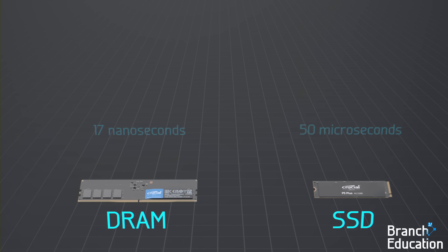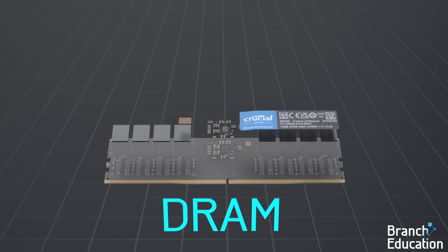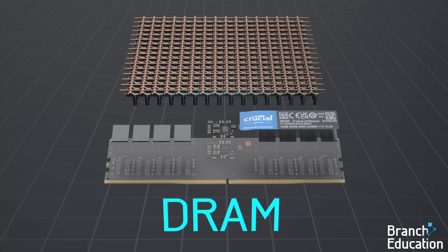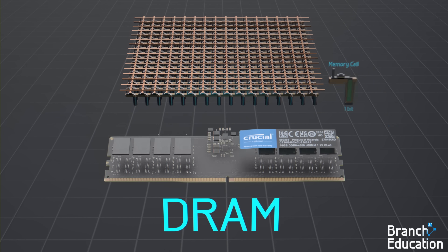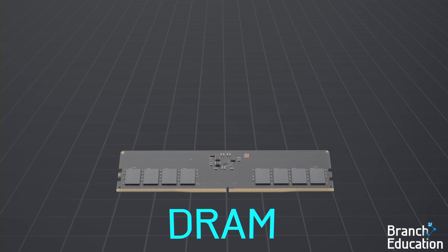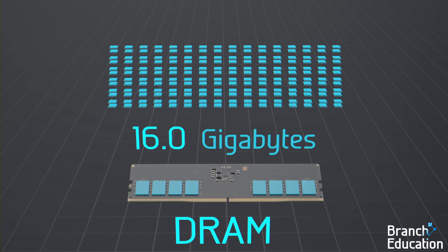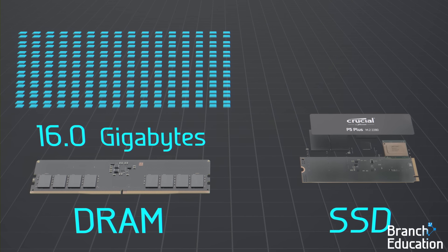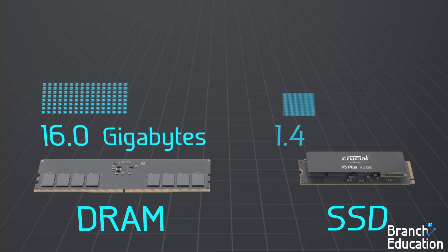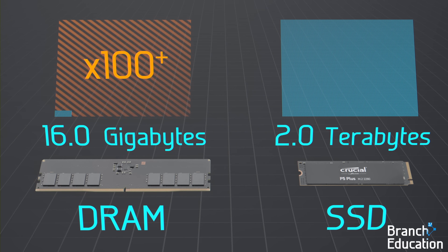However, speed is just one factor. DRAM is limited to a 2D array and temporarily stores one bit per memory cell. For example, this stick of DRAM with eight chips holds 16 gigabytes of data, whereas a solid-state drive of a smaller size can hold 2 terabytes of data — more than 100 times that of DRAM.